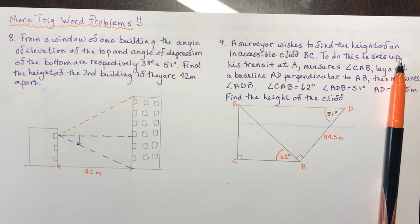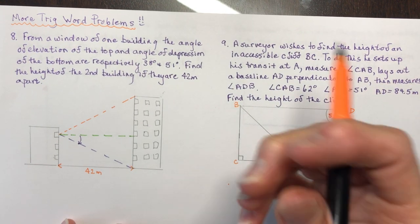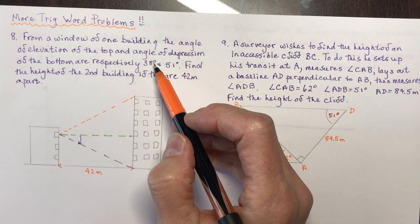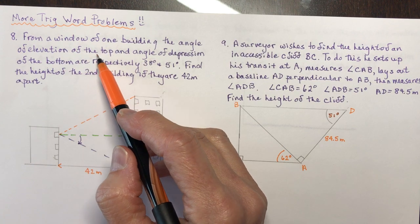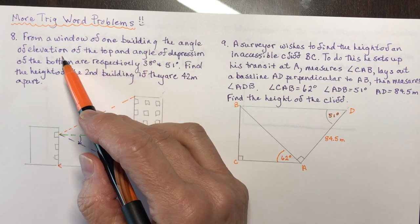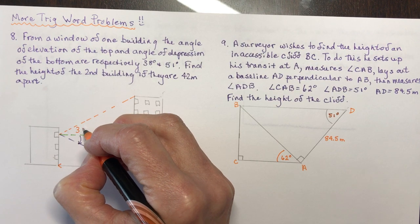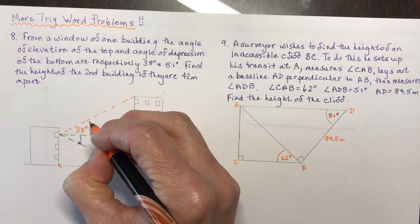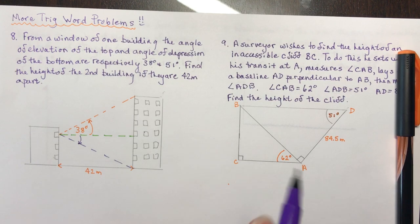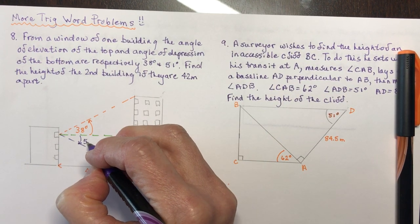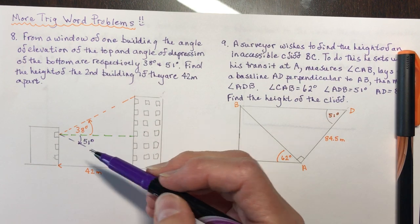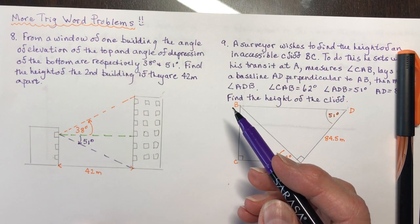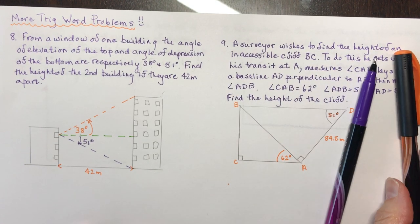I have two angles to deal with: the angle of elevation and the angle of depression. The angle of depression is from a sight line down. Respectively means the first angle goes with the first number, so the angle of elevation of the top is 38 degrees, and the angle of depression is 51 degrees.